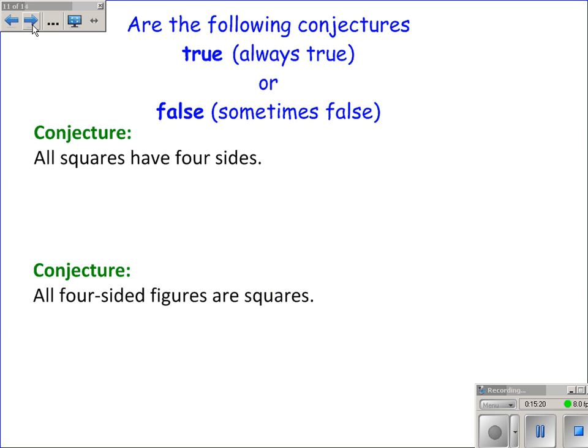All squares have 4 sides. Well, anything that's a square will have 4 sides. So that must be true. I can't find a counterexample for that. All 4-sided figures are squares. We'll get into it later on in the year, but this would not be considered a square, because it doesn't have the properties of squares.